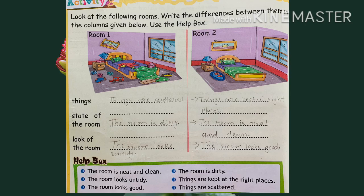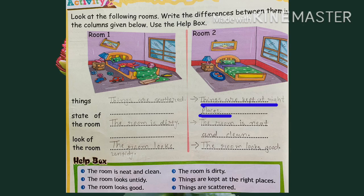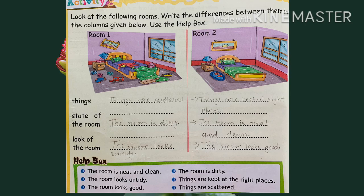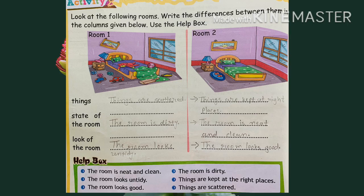यहाँ पे हमें दो rooms के differences को लिखना है. First — things: Room number 1 में things are scattered, यानी सारी चीज़ें इधर-उधर गिरी हुई हैं. Room number 2 में things are kept at right places. State of the room: Room number 1 — the room is dirty, बहुत गंदा दिख रहा है. Room number 2 — the room is neat and clean. Look of the room: Room number 1 — the room looks untidy, यानी अच्छे से arrange नहीं है. Room number 2 — the room looks good.